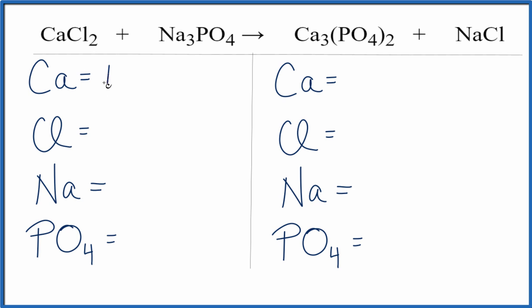We have one calcium atom, two chlorines, three sodiums, and then because I have this PO4 here, this phosphate, and I have it over here, I can just say I have one phosphate. That'll make things a lot easier.